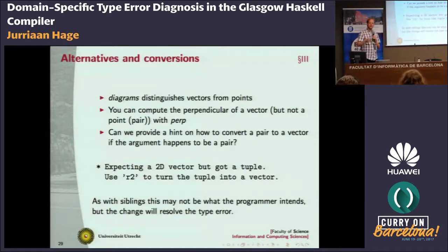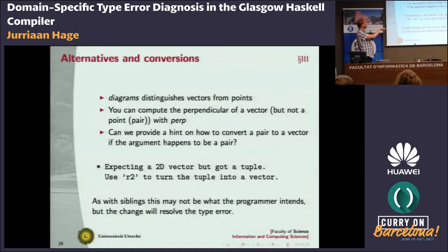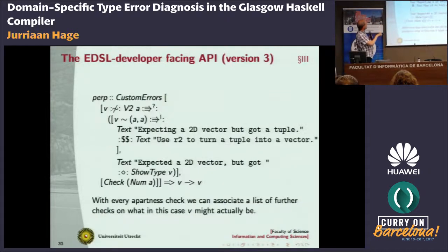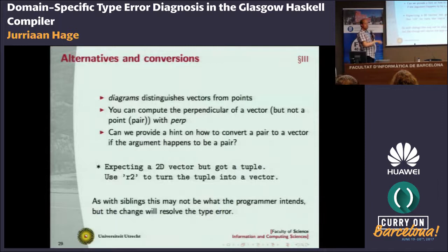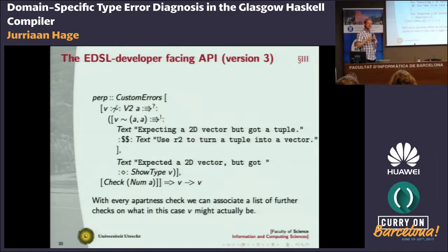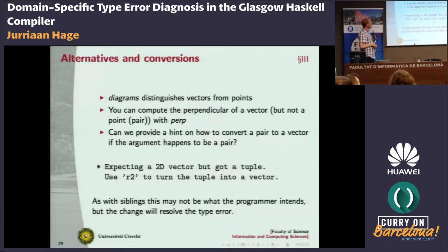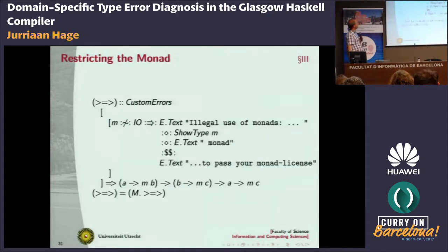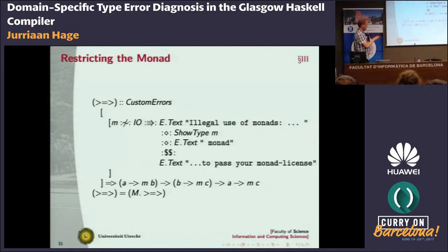One other thing you can do is alternatives and conversions. In the diagrams library, a vector and a point are two different things — you can measure the length of a vector, but not the length of a point. A programmer might say, vectors, points, it's just tuples, right? But in the case of diagrams, this is not the case. So if you have a function 'perp' which computes the perpendicular of a vector, and you give it something which is actually a tuple and not a vector, by means of this specification you can have GHC suggest: I'm expecting a 2D vector but I got a tuple — please use this conversion function to turn your pair into a vector. This is also the thing I wrote about restricting the monad to only work for IO monads, and it works.